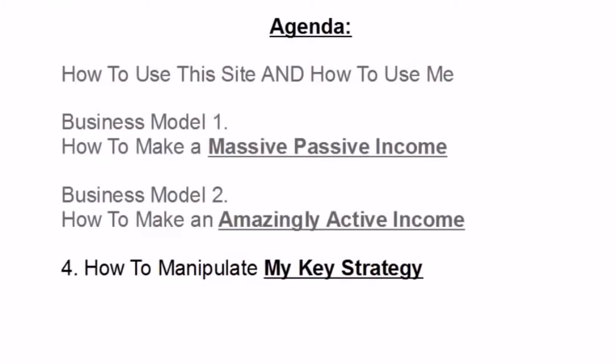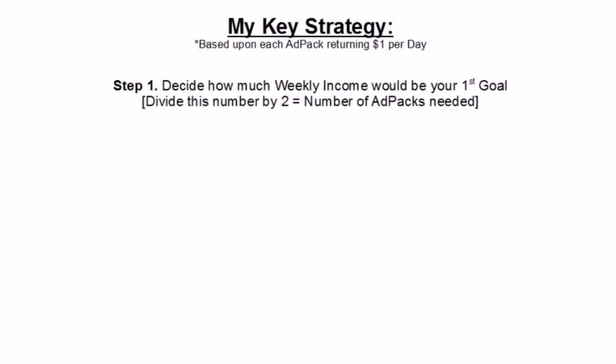Coming to step four: how you can manipulate both of these business models and follow my key strategy. Just to underline the point, my strategy is based upon each ad pack returning $1 per day, and this can fluctuate both up and down. Step one: decide how much weekly income would be your first goal. Once you've got that figure, divide it by two and that will equal the number of ad packs that you need.